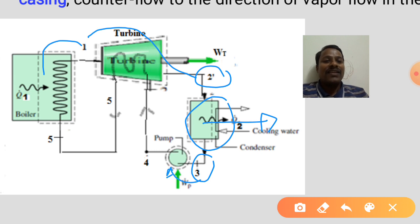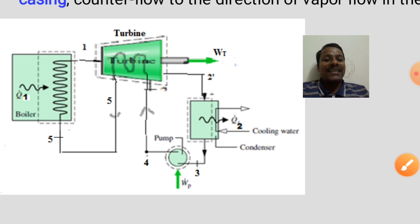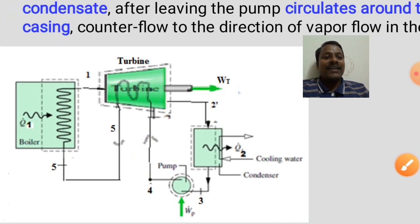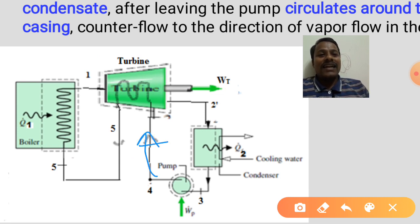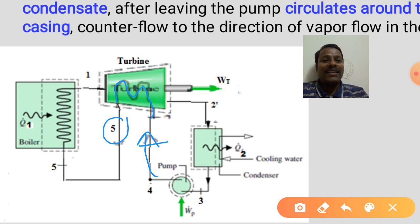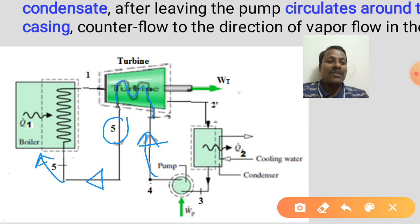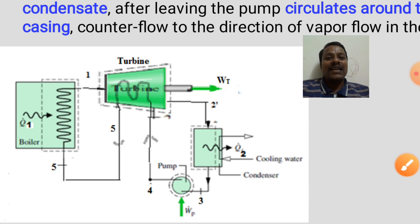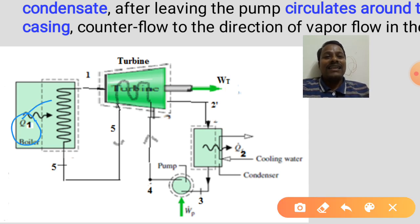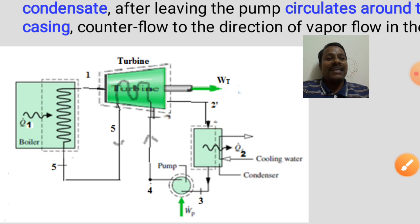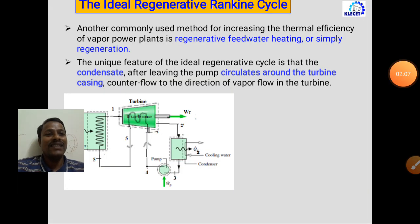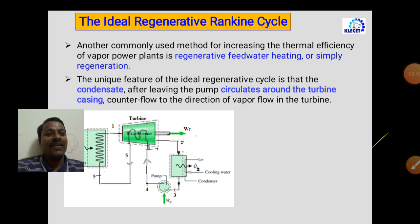The condensate then enters the pump, which pumps it at state 4 into the steam turbine casing. The condensate flows through the turbine casing, absorbs heat energy, becomes hot, and comes out at state 5. The condensate at state 5 then enters the boiler, absorbs heat energy, and comes out at state 1, completing the ideal regenerative Rankine cycle.